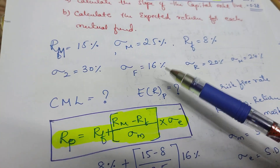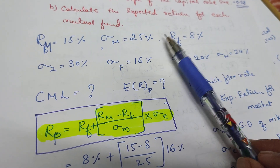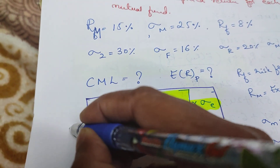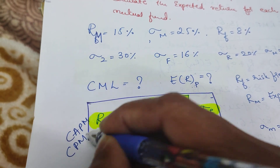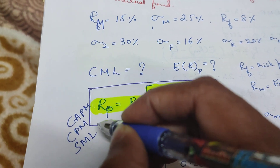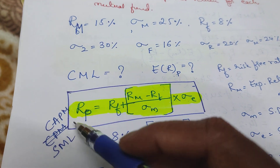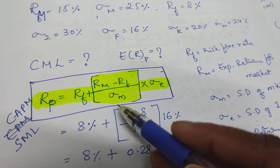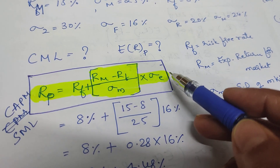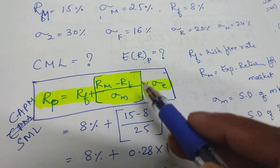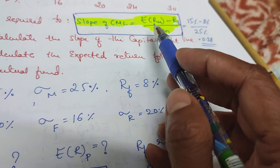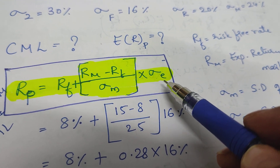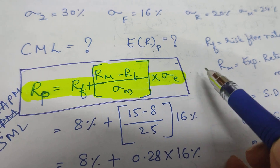Next, coming to the second part — the capital market line formula to find the expected return for each mutual fund. According to the CML formula: RP equals Rf plus (RM minus Rf) divided by standard deviation of the market, into standard deviation of the equity. The CML factor we calculated is 0.28. Mark this — this is the CML slope value we will use going forward.